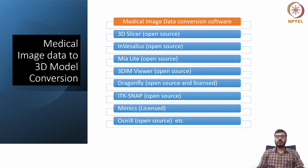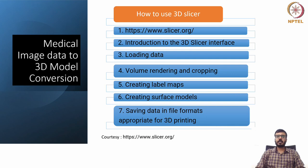For this particular session we will see how medical image data can be converted to 3D models using the software 3D Slicer. First, we need to download this 3D Slicer software from the parent website slicer.org. There are different steps involved in this process of converting medical image data to 3D modeling, and we will see them one by one.